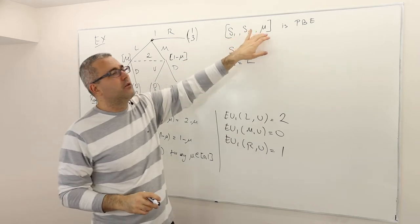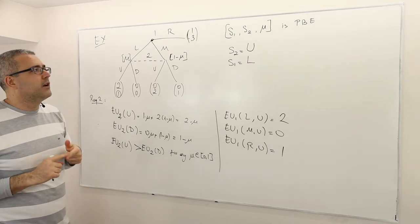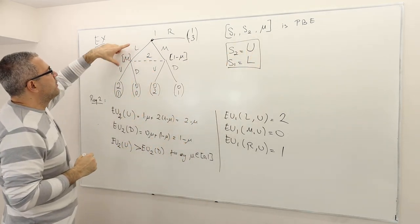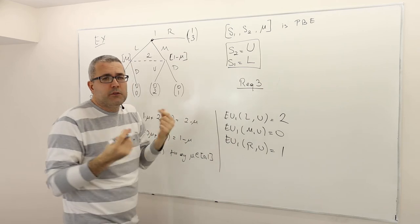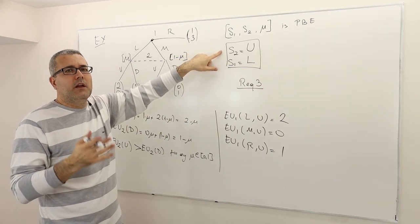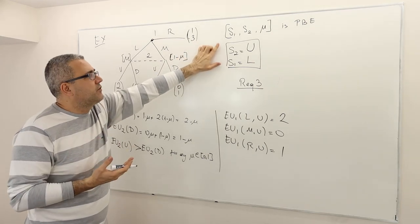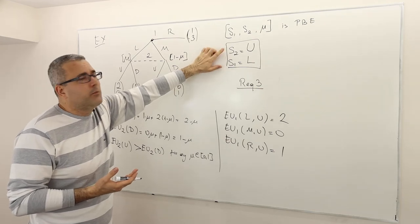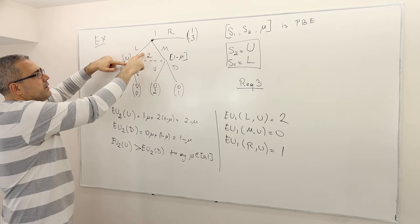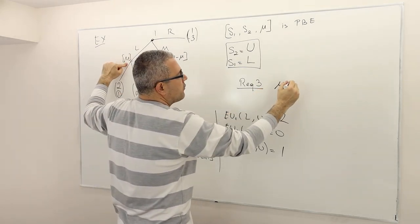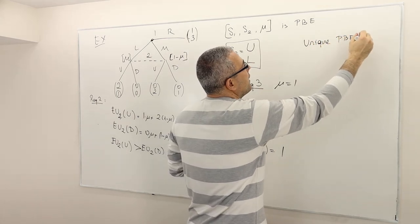So the only thing I need to find is the μ value. For this, I need to use requirement three. Given that player one is going to play left and player two is going to play U, this information set is on the equilibrium path, so I need to use requirement three. Requirement four is irrelevant for this particular strategy profile. According to requirement three, since player one is playing left for sure with probability one, μ has to be equal to one.